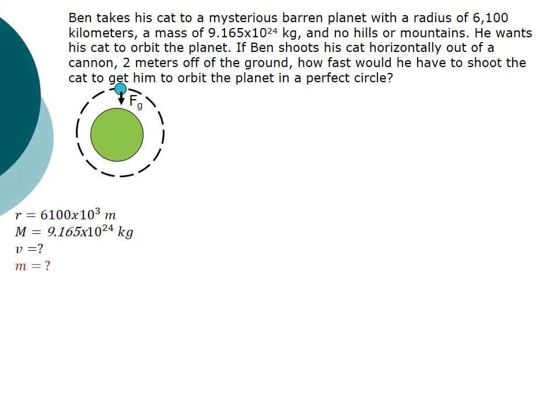We're going to list our variables. All we know is the radius of the planet, the mass of the planet. I want to know the speed it's moving at, so the speed that's tangential to the circle. And I don't know the mass of the cat. I bet that's probably important, but I have no idea what it is. So I'm just listing it as an unknown in red.